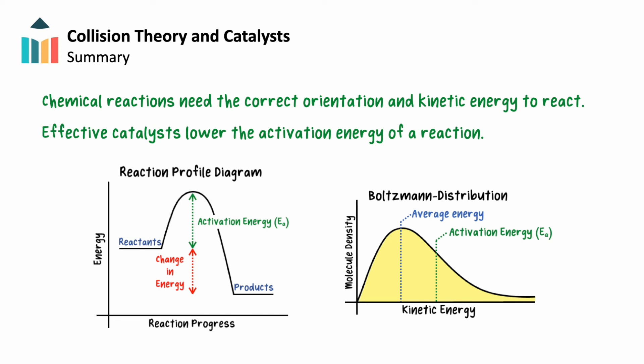In summary, chemical reactions occur when particles collide in the correct orientation and with enough energy to overcome their activation energy barrier. This barrier can be lowered through the use of an effective catalyst. We can see how the rates of these reactions change by plotting the concentration of reactants versus time. Understanding collision theory allows us to better appreciate the mechanisms that allow chemical reactions to occur, which is a fundamental aspect of IB chemistry.